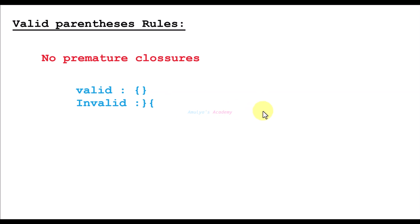Rule number 3: no premature closures. A closing bracket cannot appear before its corresponding opening bracket. For example, this is valid and this is invalid.